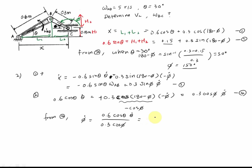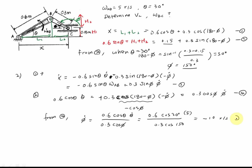Substituting values: phi-dot equals (0.6 cosine 30 times 5) divided by (0.3 cosine 150), giving negative 10 radians per second — wait, that gives minus 10. Let me compute: this equals negative 1 radian per second. The negative sign means it is rotating clockwise.